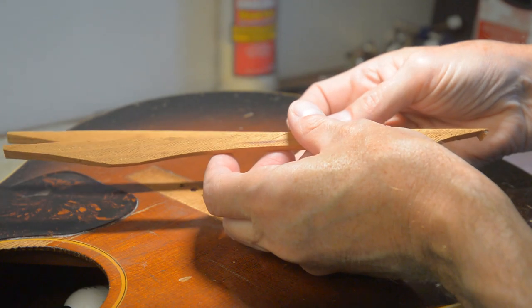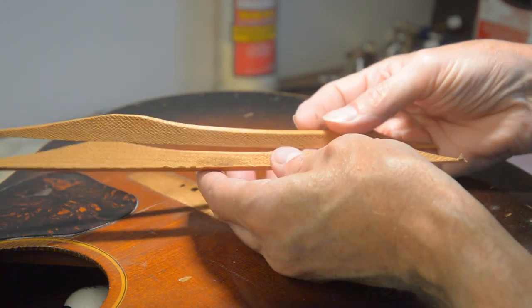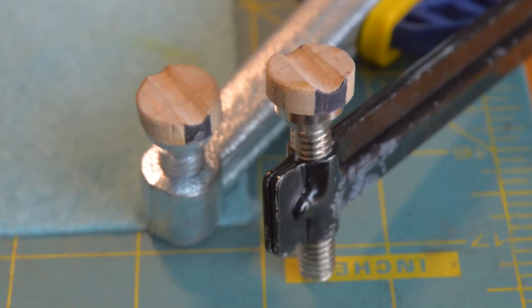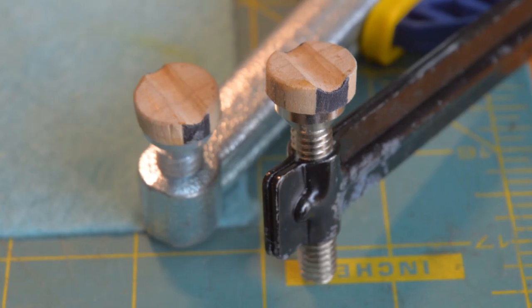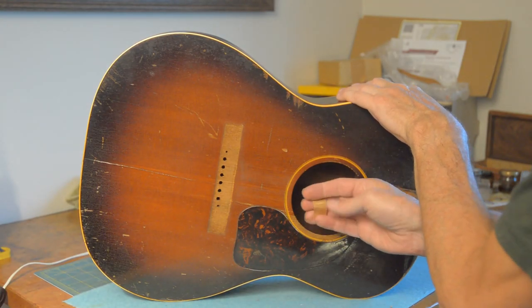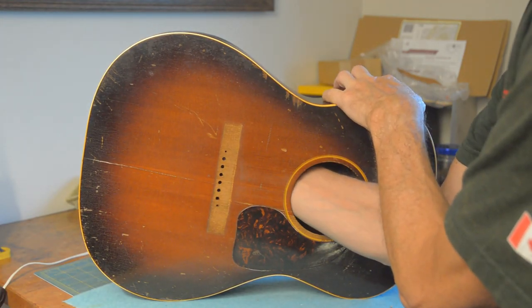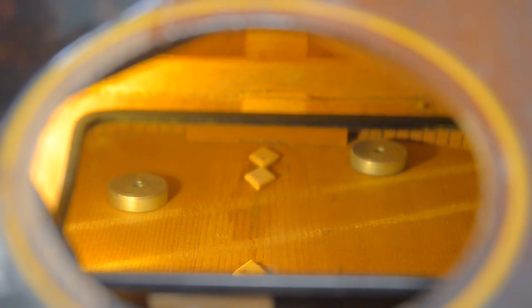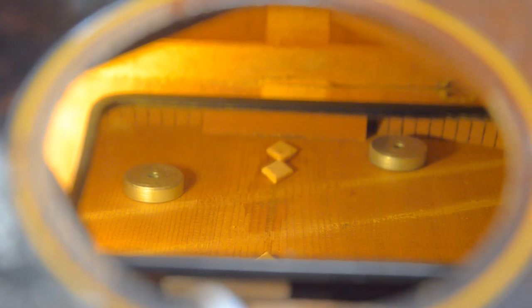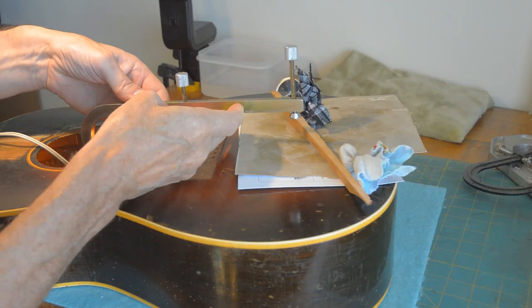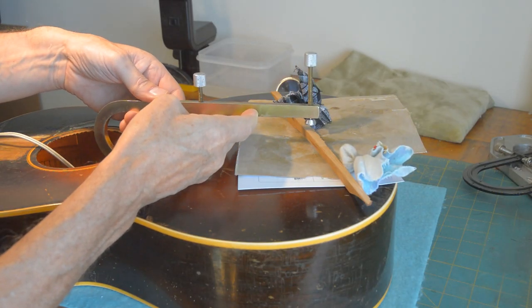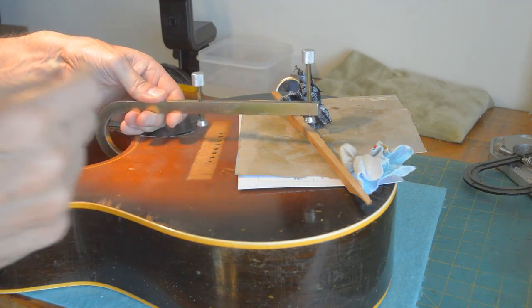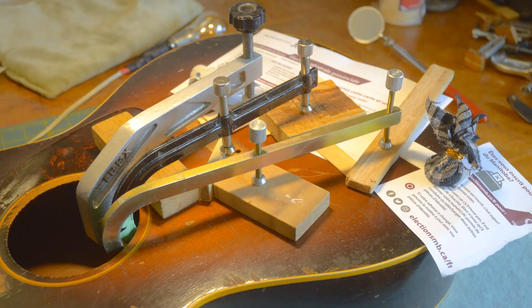This will not be easy to get these tone bars glued back in here. I modified these clamps so they don't slip off the braces as I try and tighten them. I'm going to make some effort to remove the old glue. Well, there's all the clamps in place. Here's a look on the inside.